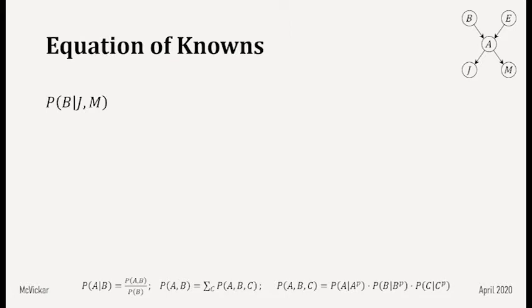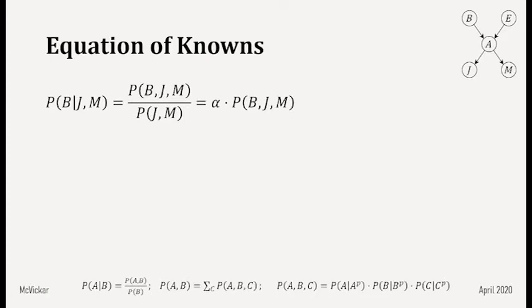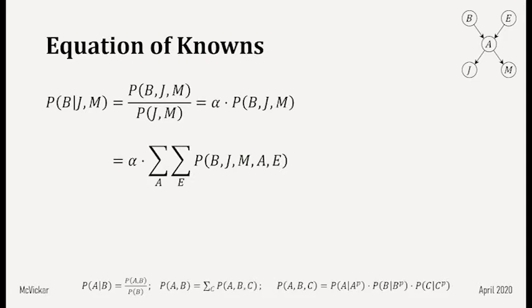We need to express P(B|J,M) in terms of things we know. Using Bayes' rule, we convert P(B|J,M) to P(B,J,M) divided by P(J,M), where 1/P(J,M) is denoted alpha. Then using the second reference equation, we expand P(B,J,M) into the full joint distribution of the network and sum out the variables we don't want — E and A. Then using the chain rule, we break up P(B,J,M,A,E) into its individual probability distributions.